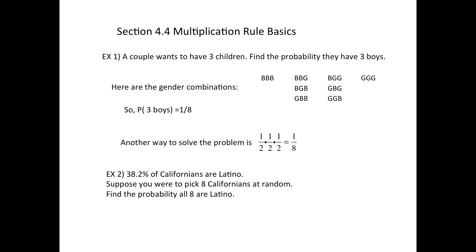So we're going to have eight in a row this time instead of three in a row. And for each one, we want all of them, or for each one, we want them to be Latino. Well the chances of that are 38.2% for each.